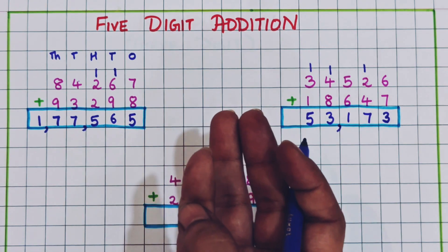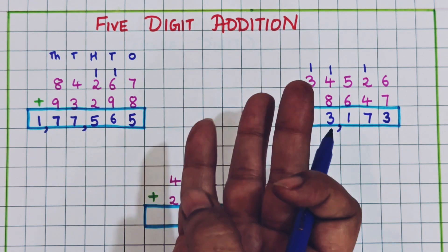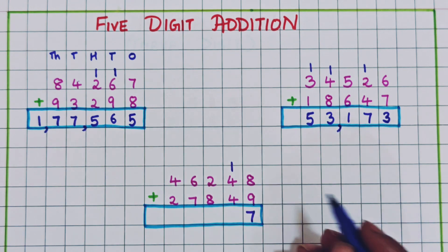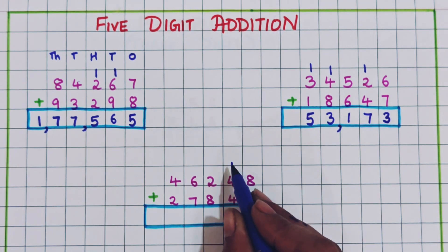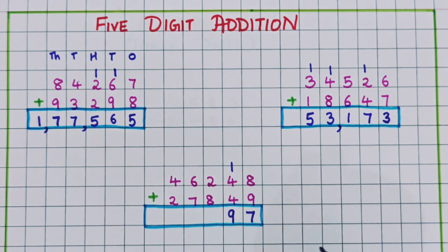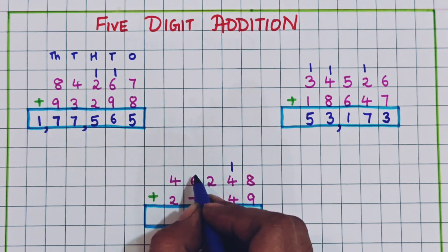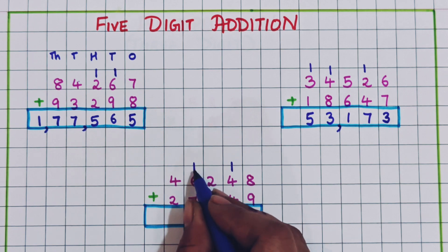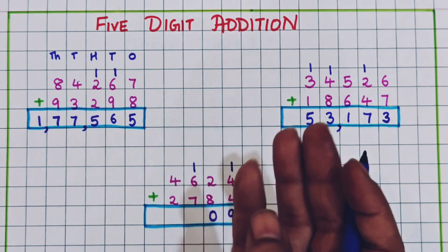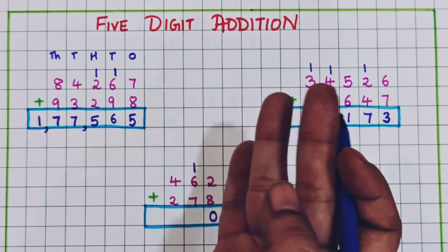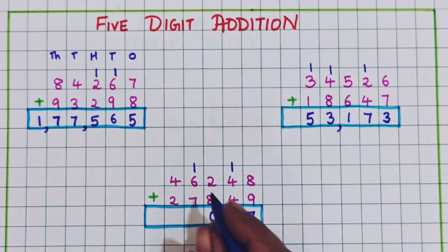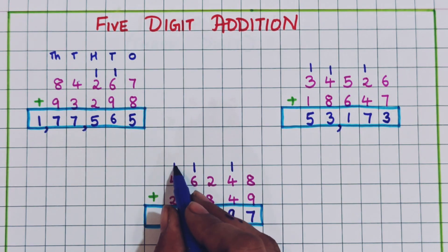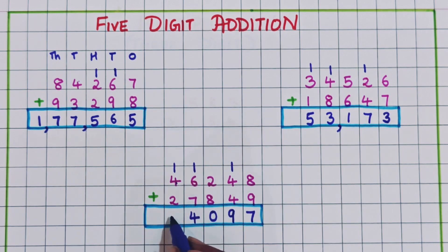Last example: 46,248 plus 27,849. Ones place: 9 plus 8 — 10, 11, 12, 13, 14, 15, 16, 17 — write 7 and carry 1. Tens: 4 plus 4 is 8, plus 1 is 9. Hundreds: 8 plus 6 — 9, 10, 11, 12, 13, 14 — write 4 and carry 1. Thousands: 6 plus 7 is 13, write 3 and carry 1. Then 4 plus 2 is 6, plus 1 is 7.